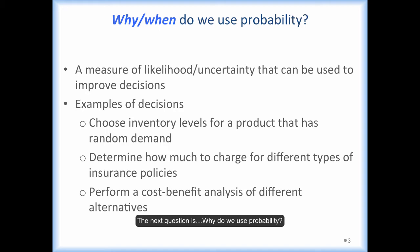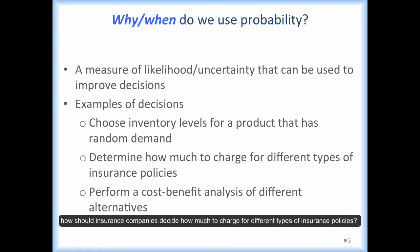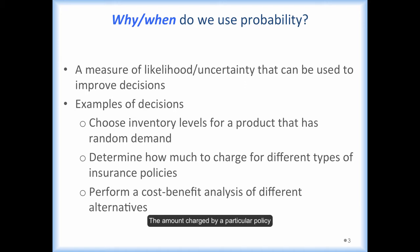The next question is, why do we use probability? We use probability because we want to weigh impacts of uncertainties in decision making. For example, should I bring an umbrella if the probability of raining is 60%? Or for a business example, how should insurance companies decide how much to charge for different types of insurance policies? The amount charged by a particular policy largely depends on the likelihood for the incidents that are covered by the policies.